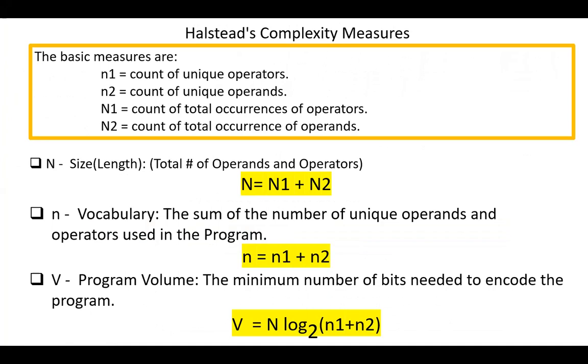Having the values of small n1, small n2, capital N1, capital N2, we can compute different measures. Capital N, the length or the size of the program, is defined as the total number of operands and operators. So capital N equals N1 plus N2.